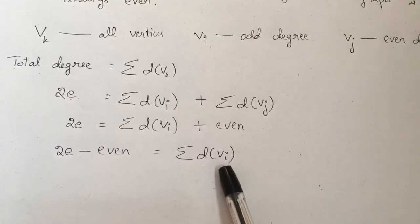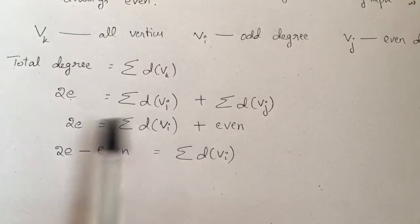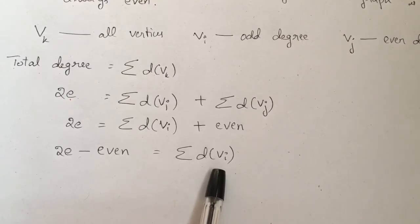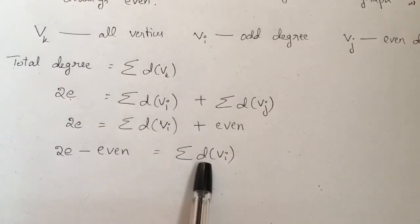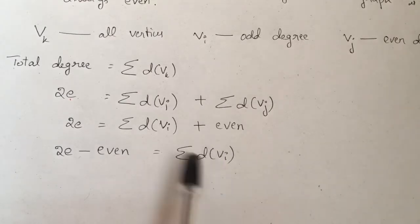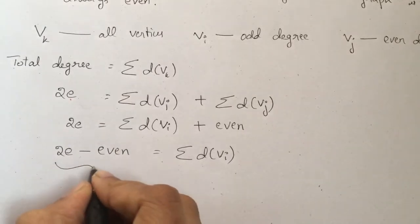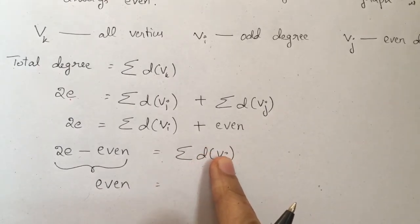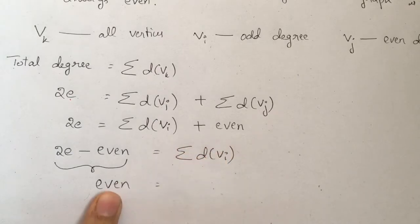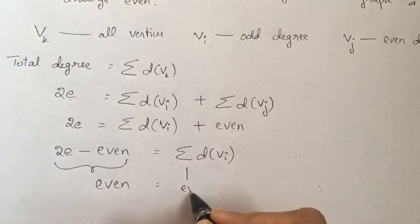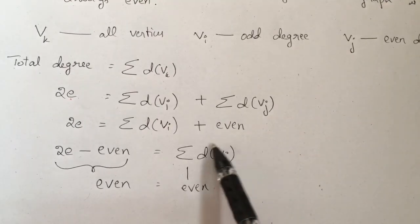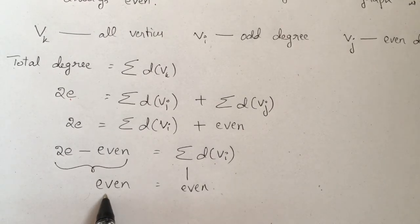Since each individual odd-degree value (dvi) is an odd number, their sum must still give an even number. This means we must be adding an even count of odd numbers — so the number of odd-degree vertices must be even. Therefore, the number of vertices of odd degree in any graph is always an even number.